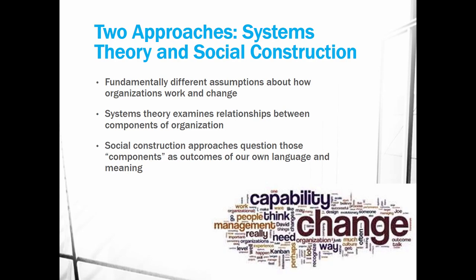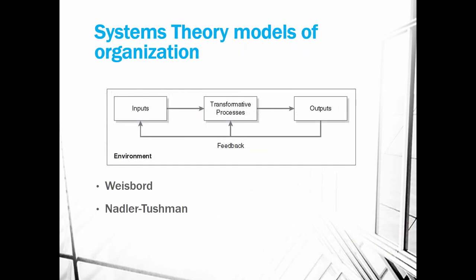Systems theory and social construction, fundamentally at their core, reflect different assumptions about how organizations work, how they change, and how we should think about them. Systems theory examines relationships between components of an organization. Social construction approaches question those components as outcomes of our own language and meaning — this is the communication perspective. Let's dive in first to systems theory models of organization.